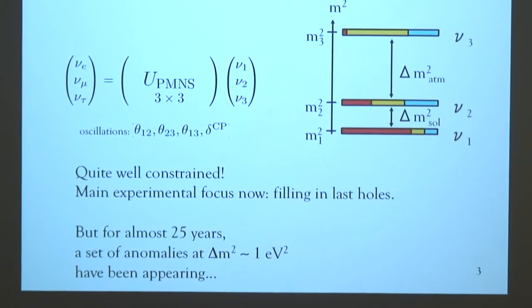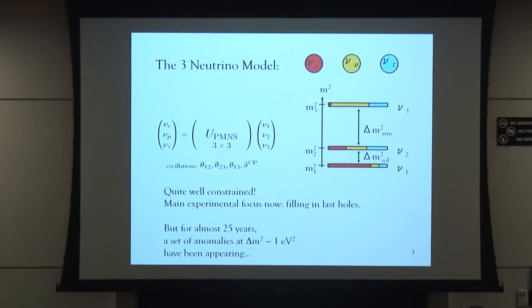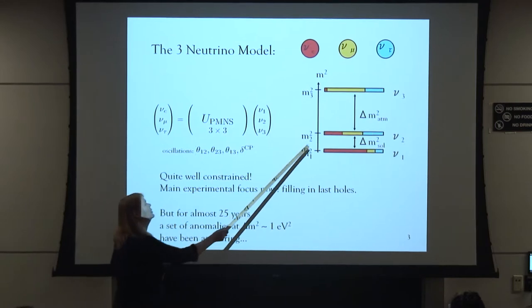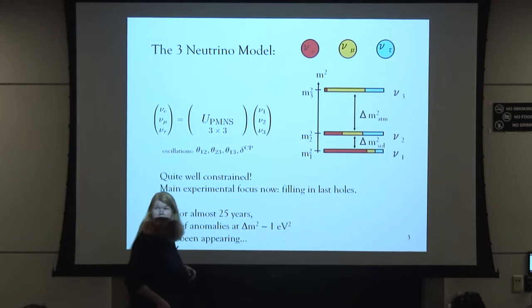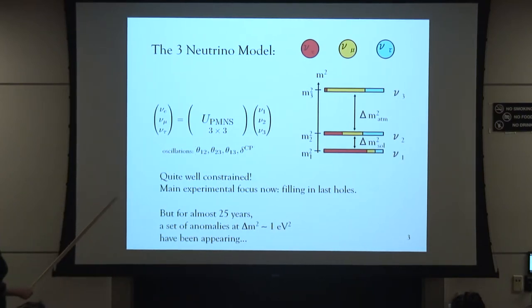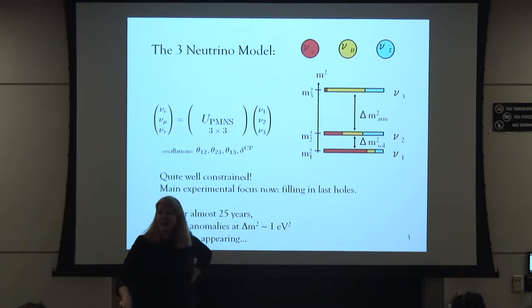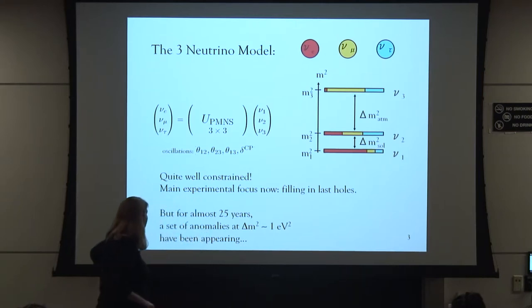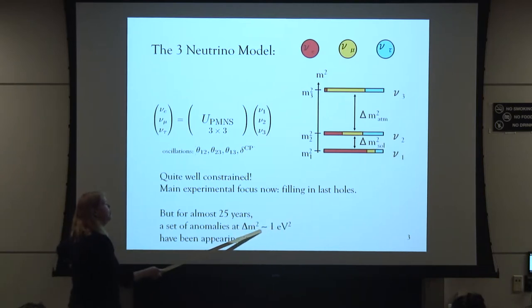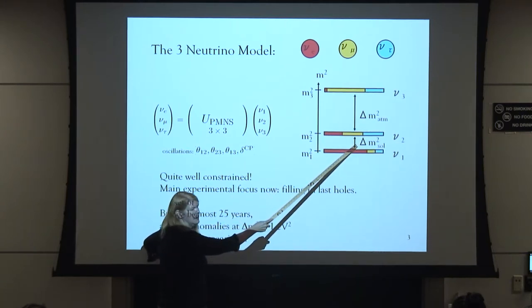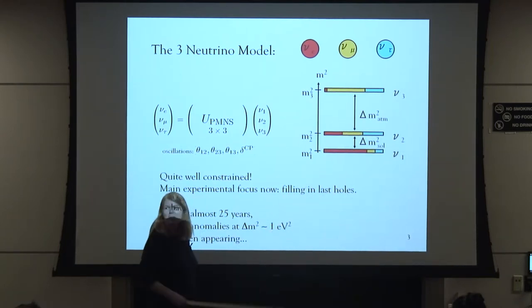When we left this picture yesterday, we had our three-neutrino model: three flavors, three mass states, a PMNS matrix mixing all the pieces, described by lines showing different flavor mixings and mass splittings. Where I ended was to say that this model is very well constrained. The main experimental focus now is filling in last holes related mostly to the mass hierarchy and to delta CP.